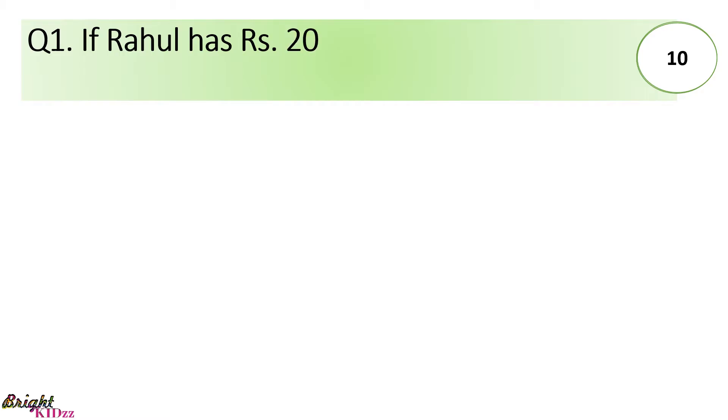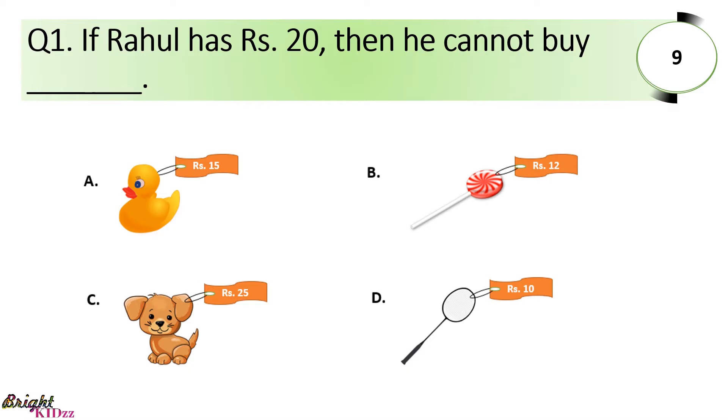If Rahul has Rs. 20, then he cannot buy dash. Answer: A puppy because its cost is more than Rs. 20.